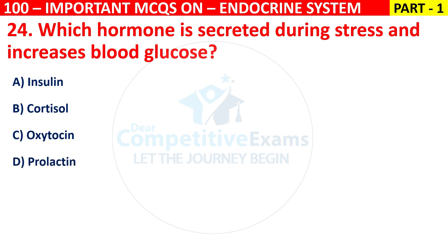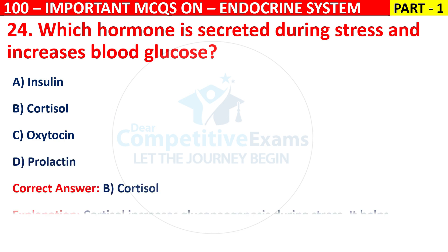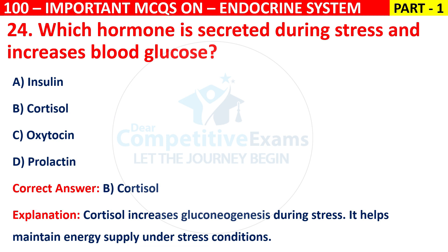The correct answer is B, that is cortisol. Cortisol increases gluconeogenesis during stress. It helps maintain energy supply under stress conditions.